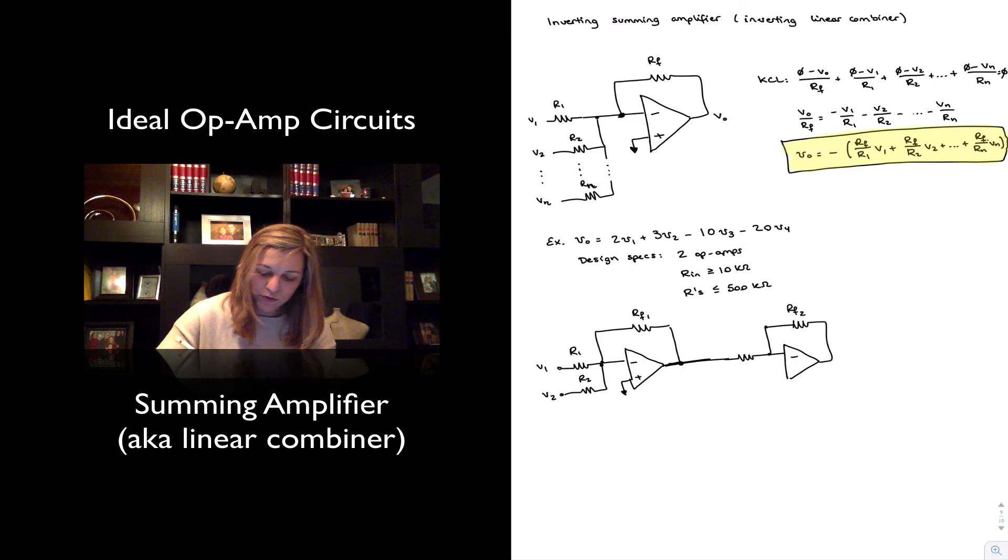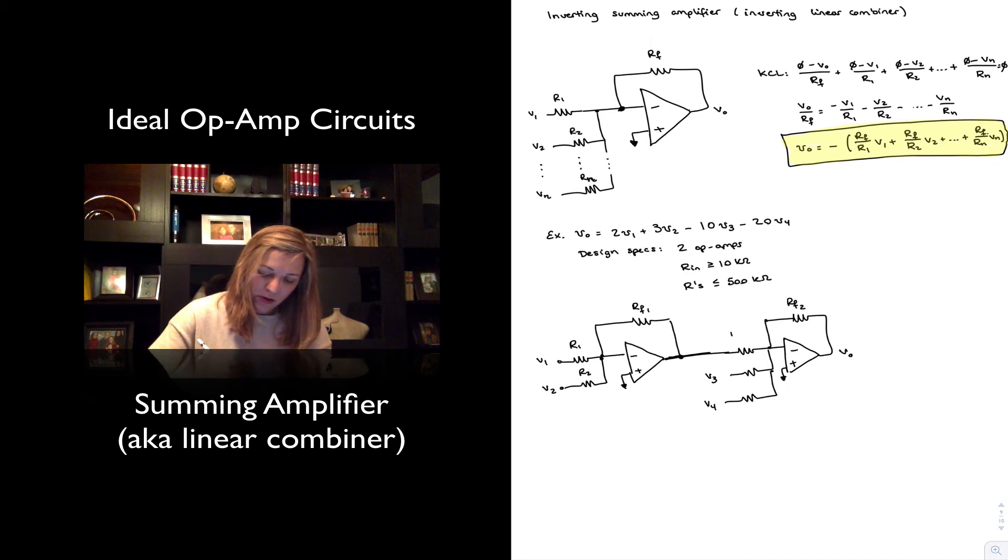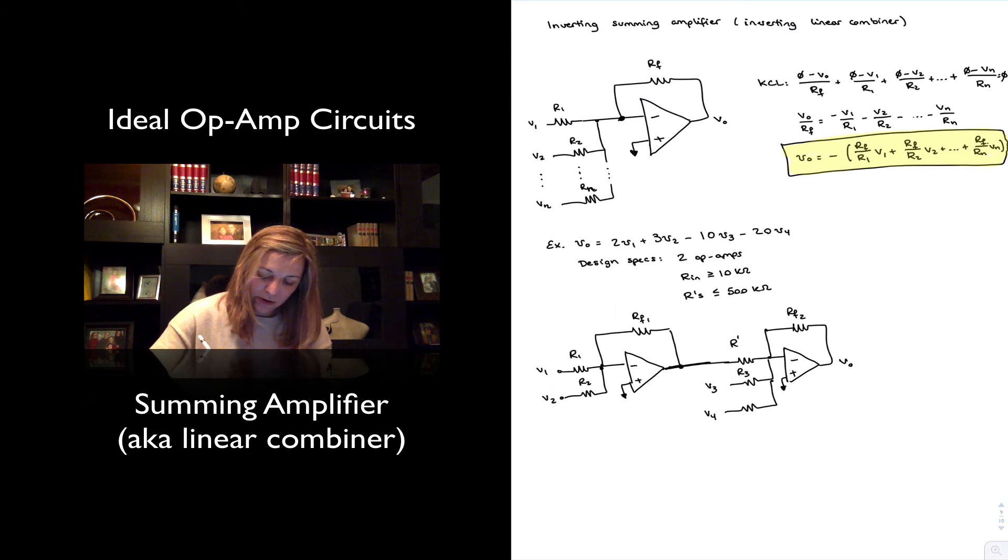I'll call this RF2, this will be V3 and V4, that's grounded and I can call this R prime perhaps and then R3 and R4. And so how will I achieve first of all 2V1 plus 3V2? I need ratios between RF and R1 and R2 that are 2 and 3 respectively and so I could choose for example